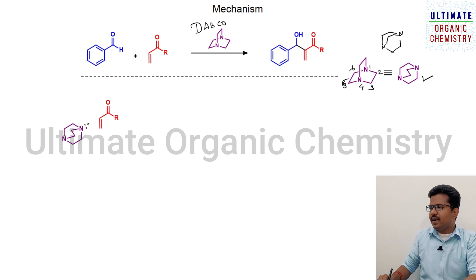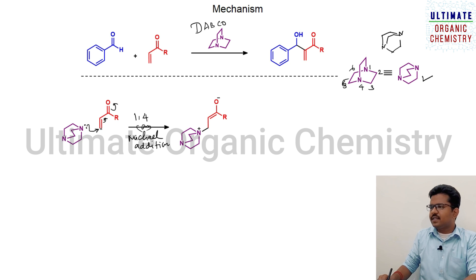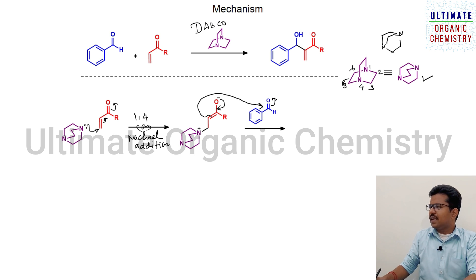Once the nitrogen lone pair of DABCO attacks the alpha,beta-unsaturated system via a 1,4-type (Michael-type) addition mechanism, it leads to the formation of an intermediate. The nitrogen donates a pair of electrons to the beta-carbon, generating a positive charge on nitrogen, while the pi electrons move toward the oxygen atom, generating a negative charge. Next, when this intermediate reacts with the benzaldehyde system, the electron comes back to the carbon atom and the alpha position of the alkene attacks the carbonyl carbon.